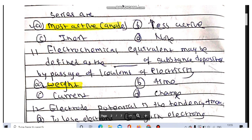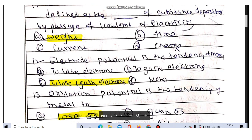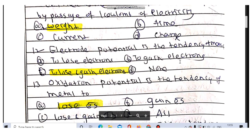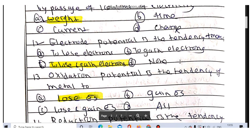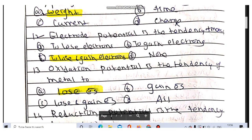Electrode potential is the tendency of metal to lose electron, gain electron, or both. The answer is to lose and gain electron both combined. It is known as electrode potential.